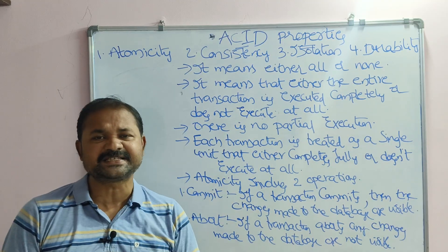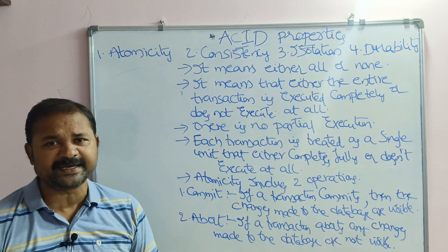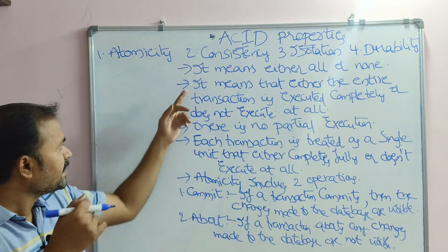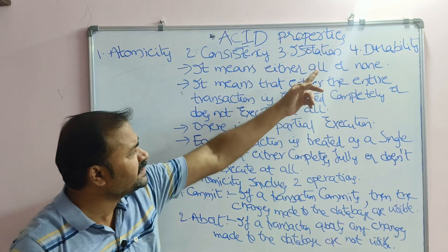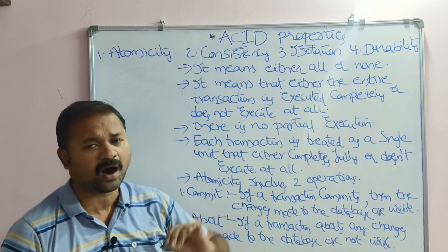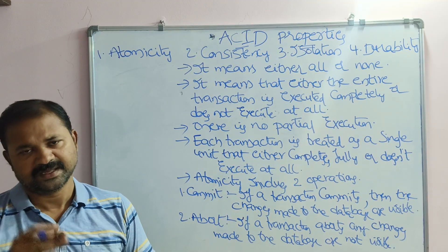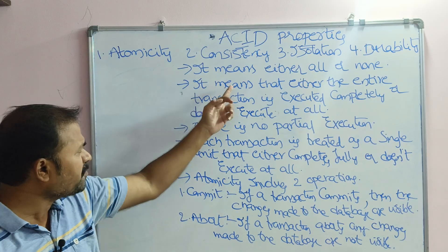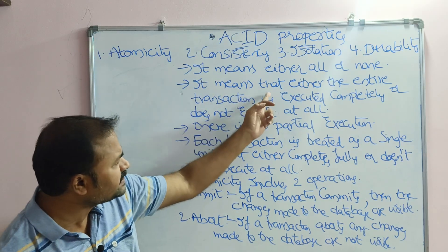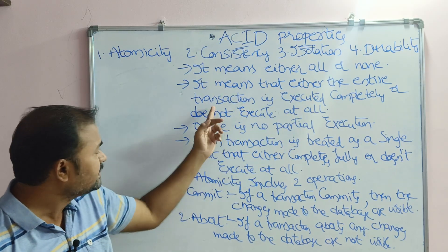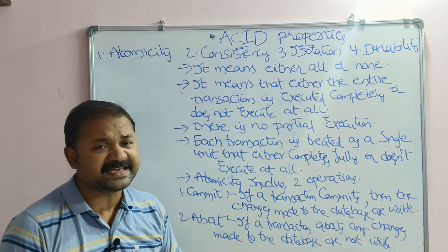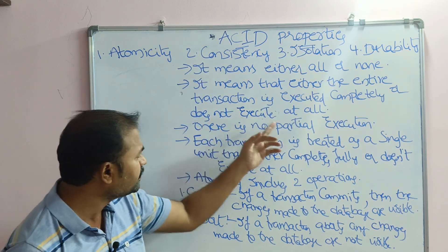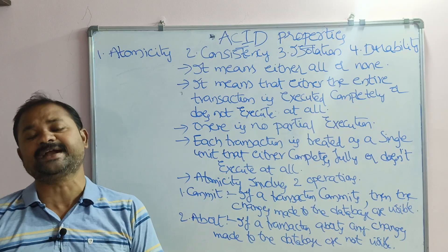First, let us discuss the first property, that is Atomicity. Atomicity means either all or none — that is, either the entire transaction is executed completely or does not execute at all.